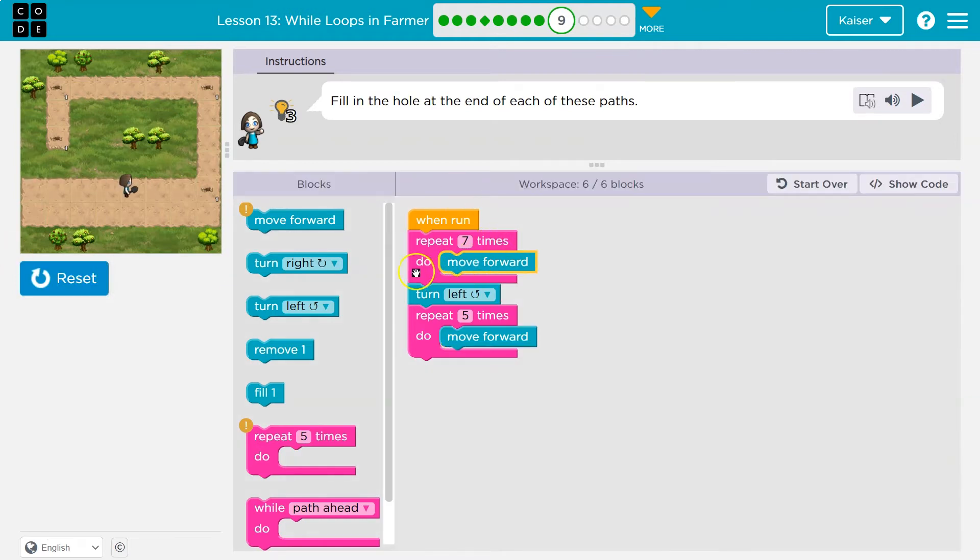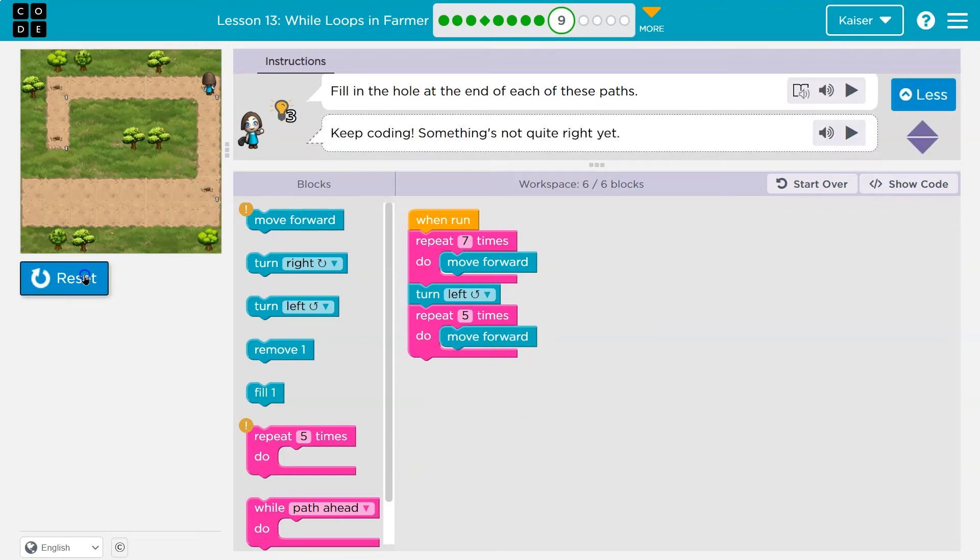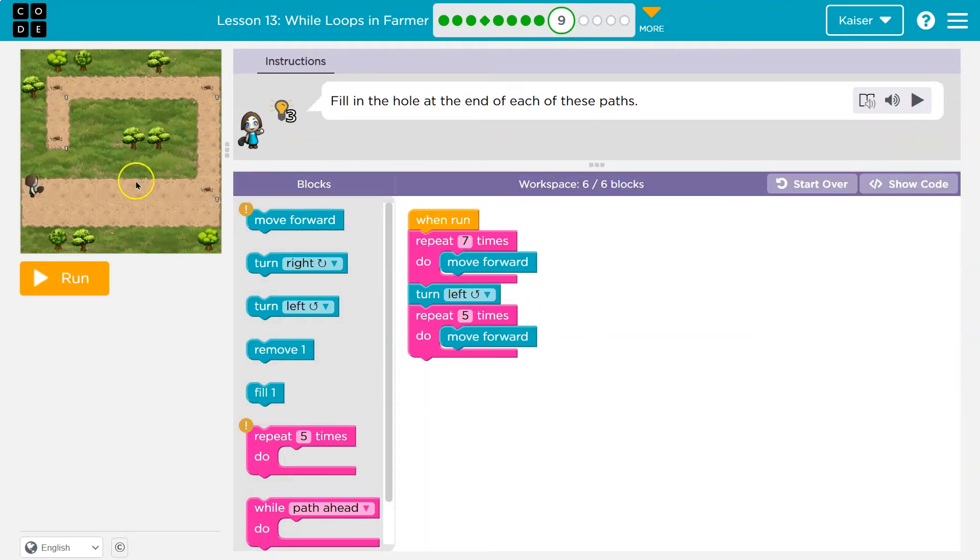So repeat seven times, I move forward. I turn left there and then I repeat five times. It's even less than that. So it must be four. So we can't use a repeat block for movement then because these are different lengths.